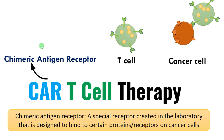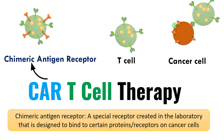In CAR T-cell therapy, the T-cell is genetically engineered with receptors called chimeric antigen receptors. These receptors can specifically identify the proteins or receptors present on cancerous cells so that it can target, identify, and ultimately kill the cancer cell. So it is a kind of targeted therapy.